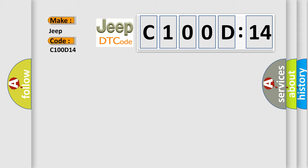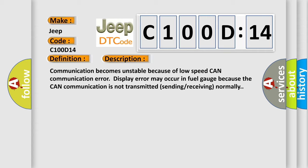The basic definition is CAN LS counter abnormal. And now this is a short description of this DTC code. Communication becomes unstable because of low-speed CAN communication error. Display error may occur in fuel gauge because the CAN communication is not transmitted or receiving normally.